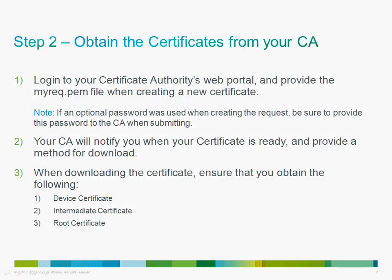Now that we have the myrequest.pem and mykey.pem files, we proceed to step 2: obtain the certificates from your certificate authority. Log into your CA's web portal and provide the myrequest.pem file when creating the new certificate. If you used an optional password in the CSR request, be sure to provide that password to your CA — otherwise the chaining process will fail. Your CA will notify you when the certificate is ready and provide a download method. You want to obtain three things: the device certificate, the intermediate certificate, and the root certificate. Sometimes the CA provides only the device and intermediate cert, so check their support pages or contact CA tech support for the root certificate.